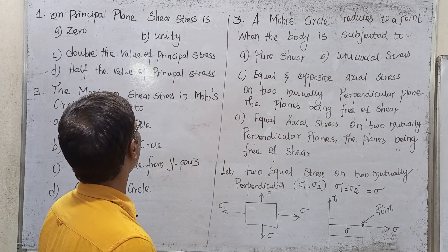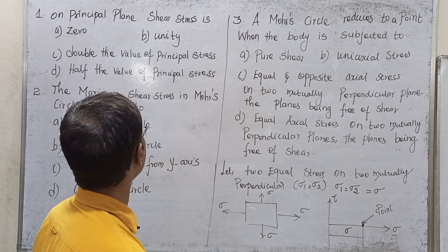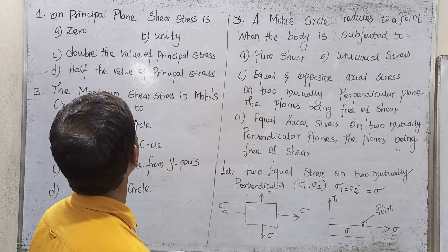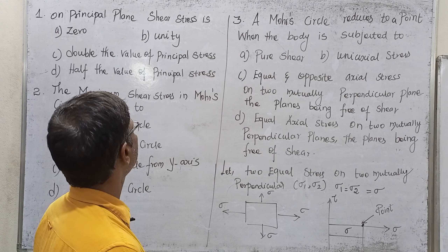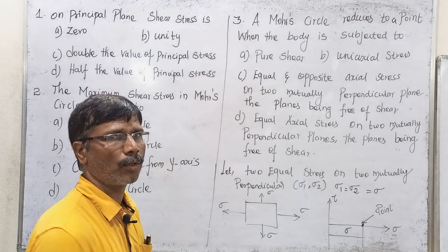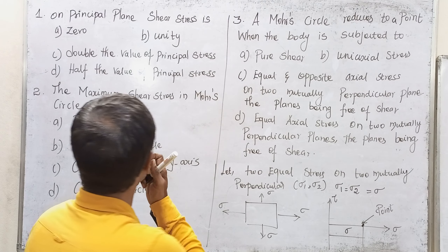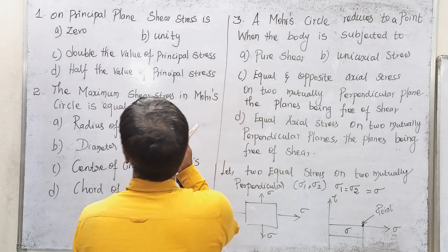The principal stress relationship: one is double the value, the other is half the value of principal stress. So if shear is zero on a principal plane, option A is the right answer.